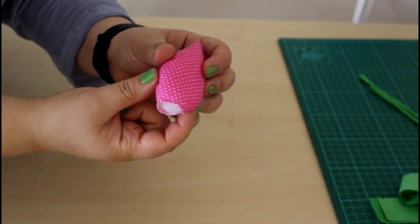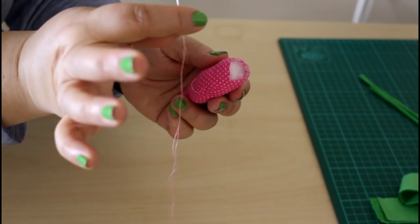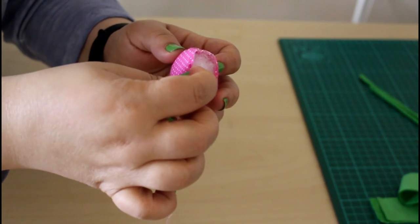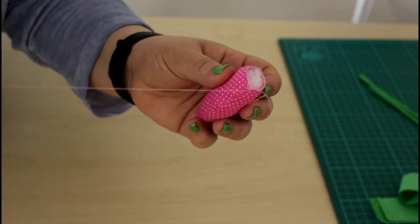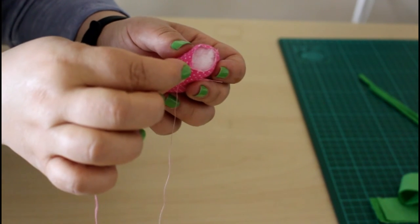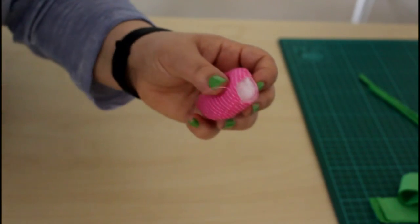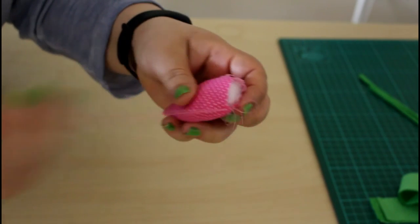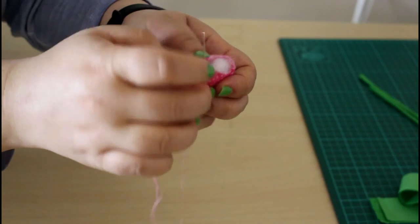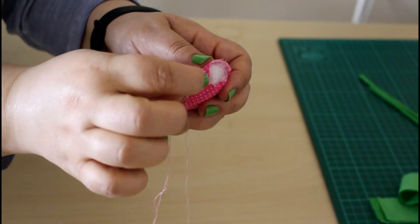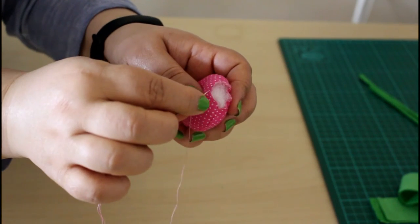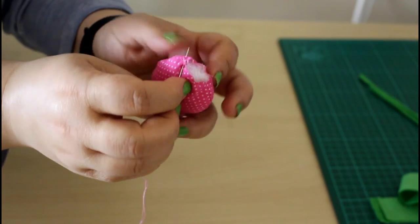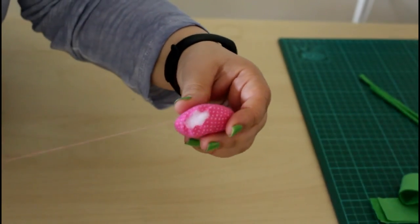After you fill the flower with poly, use a thread and needle, and you just stitch it closed. Pull the thread.